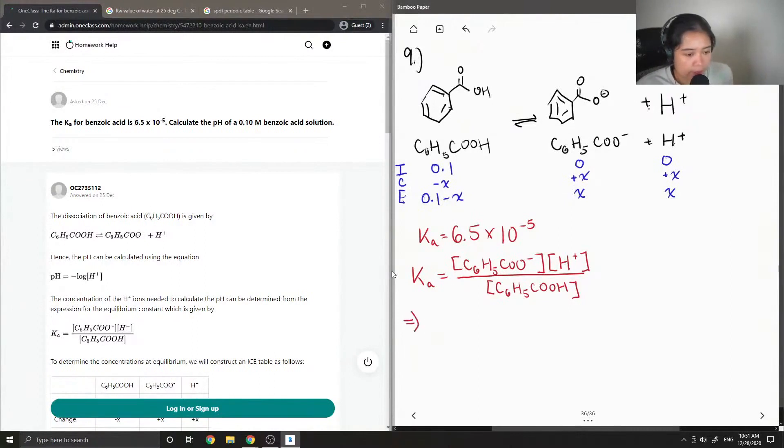Okay, so let me sub in the values that we know. We know Ka is equal to 6.5 times 10 to the negative 5. And at equilibrium, we know that both the concentrations of our products is equal to X. So when you multiply X times X, you get X squared. And the concentration of our reactant, 0.1 minus X at equilibrium.